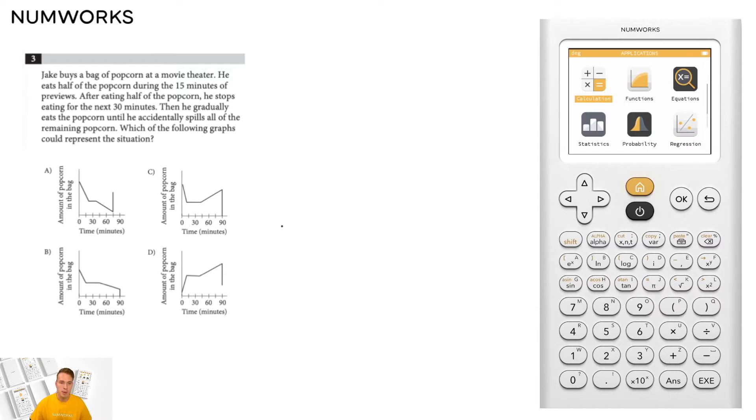He eats half of the popcorn during the 15 minutes of previews. After eating half of the popcorn, he stops eating for the next 30 minutes. Then he gradually eats the popcorn until he accidentally spills all of the remaining popcorn. Which of the following graphs could represent the situation?